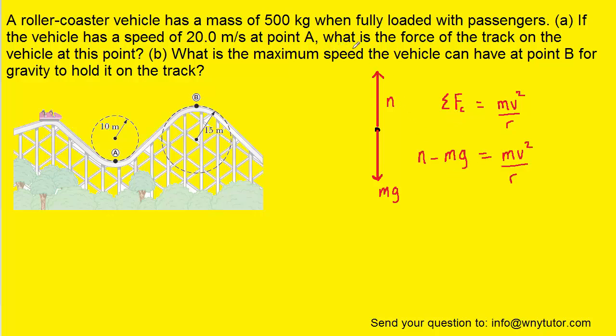Since the question in part A is asking us for the force that the track exerts on the vehicle, we are essentially being asked to solve for the normal force, so we're going to add mg over to the right side of the equation. We'll notice that mass appears in both terms of the equation, so we can actually factor it out.